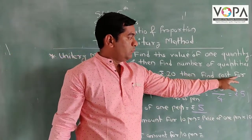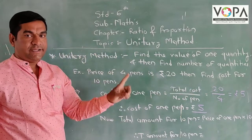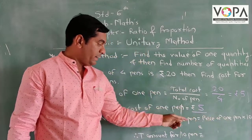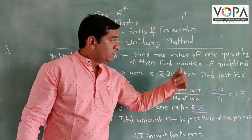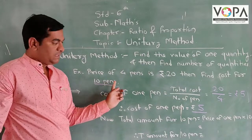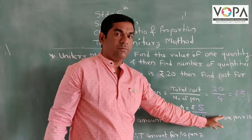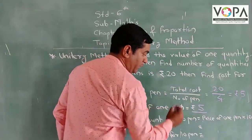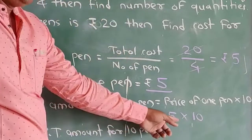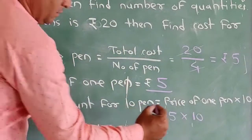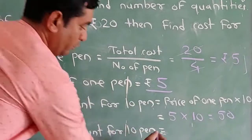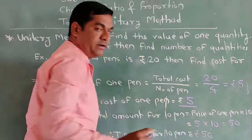From this, we find the total cost for 10 pens. The total amount for 10 pens is equal to the price of one pen multiplied by the number of pens required, which is 5 into 10. So the total amount for 10 pens is equal to 50 rupees. This is our final answer.